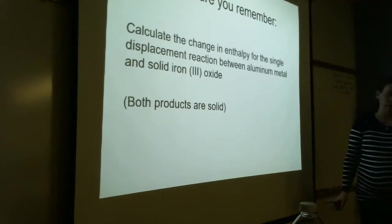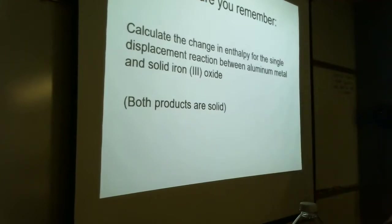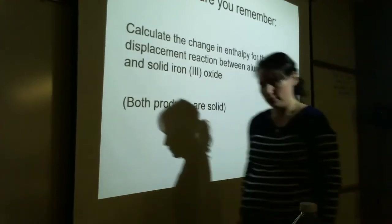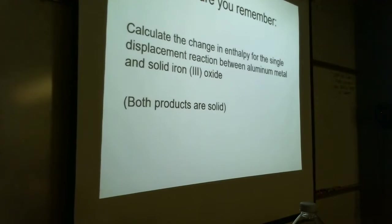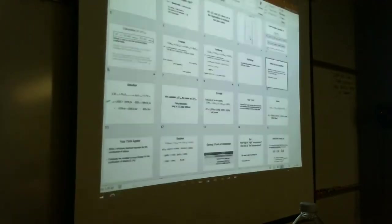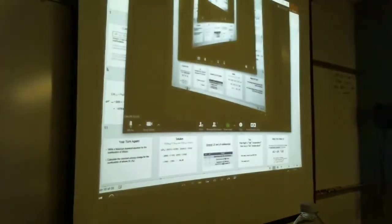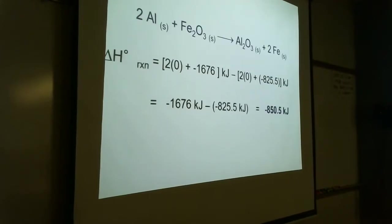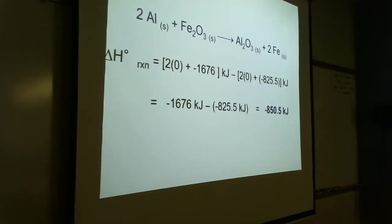So why don't you try this one — just to refresh our memory and make sure we still feel good about this. Calculate the change in enthalpy for the single displacement reaction that occurs between aluminum metal and solid iron 3 oxide, assuming that both products are solids. I'll pause the recording and give you a minute to try this one. I got negative 850.5 kilojoules.